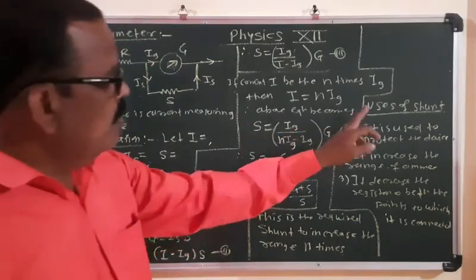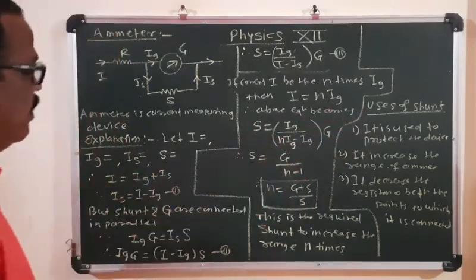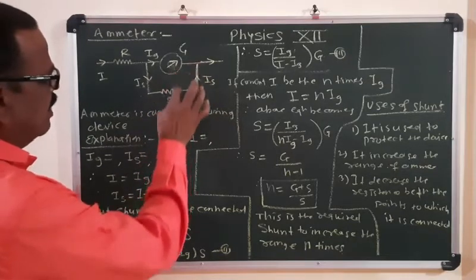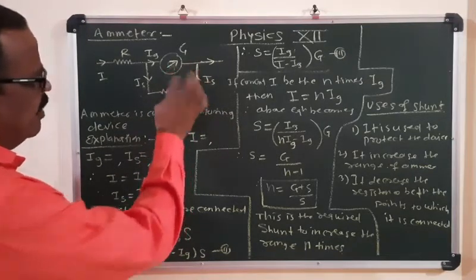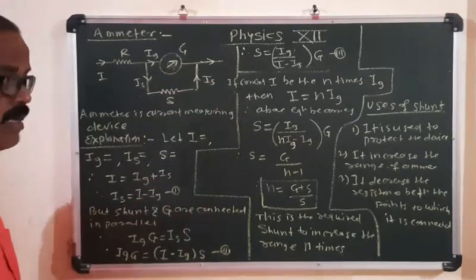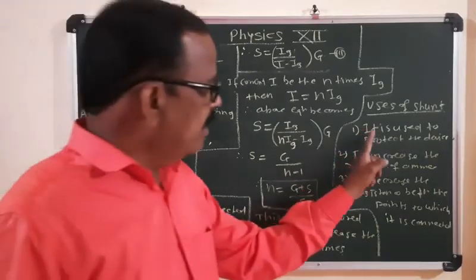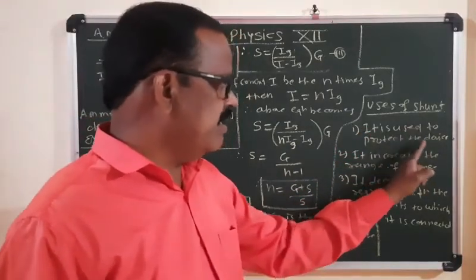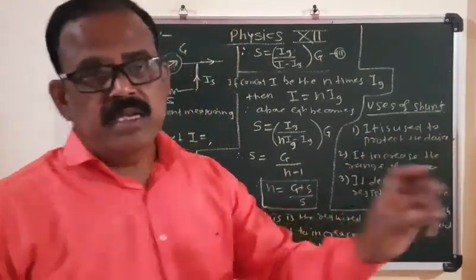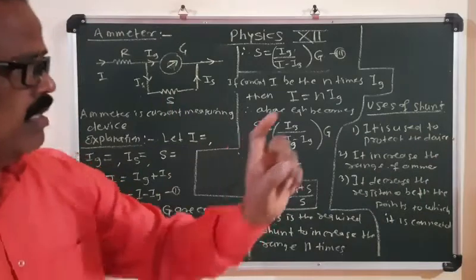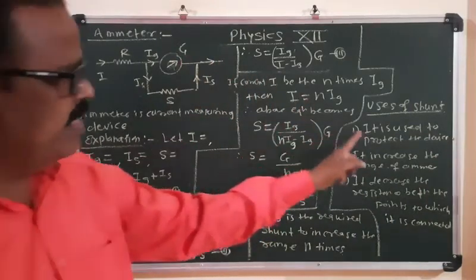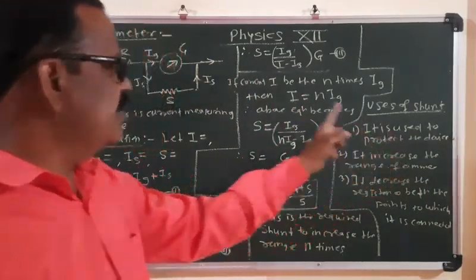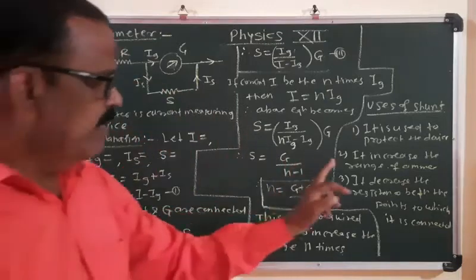The shunt connected in parallel to the galvanometer coil has the following uses: first, it is used to protect the device — the galvanometer can be protected by the shunt, and hence the shunt is used in the circuit.